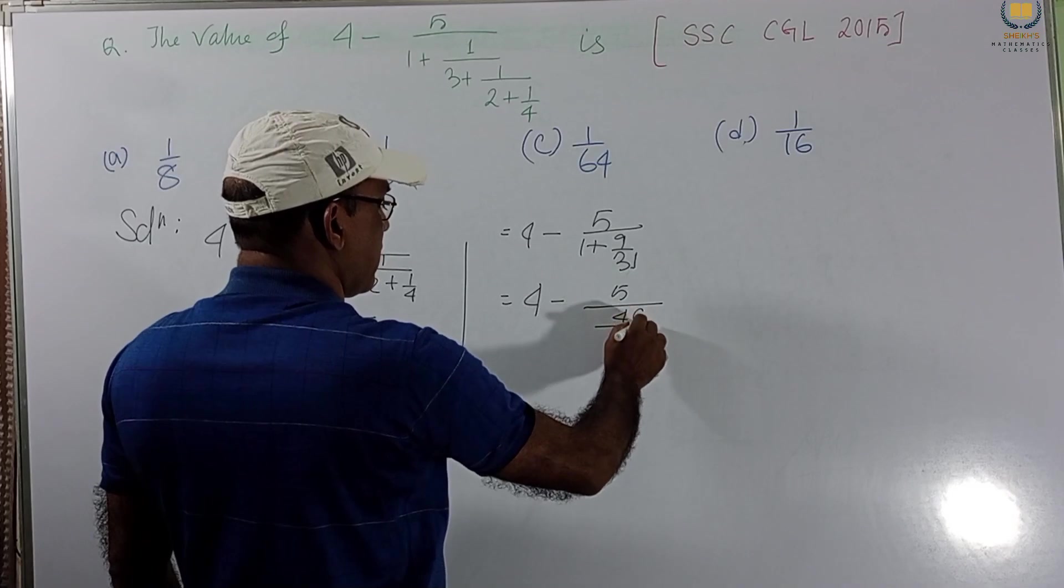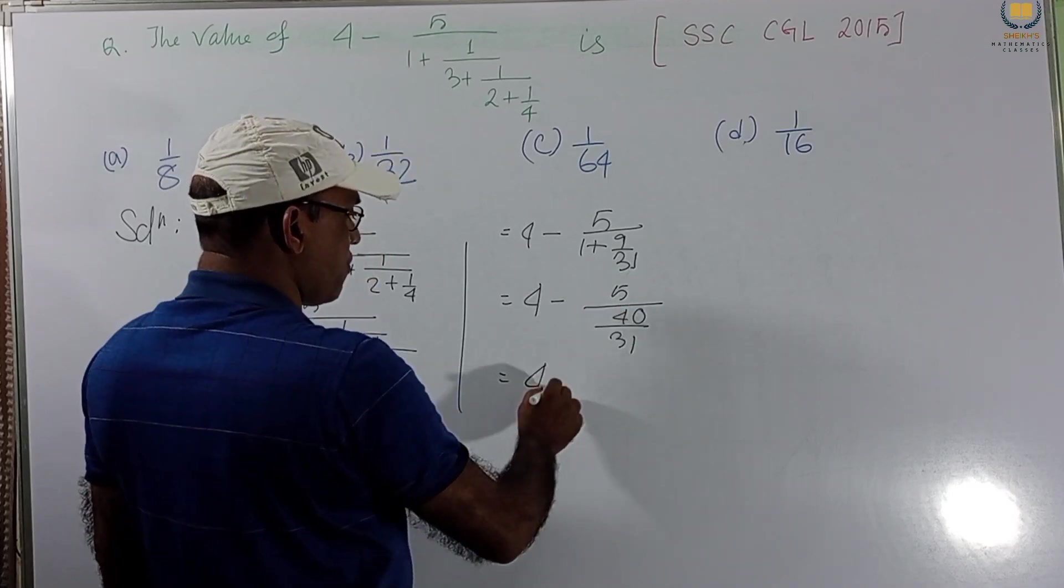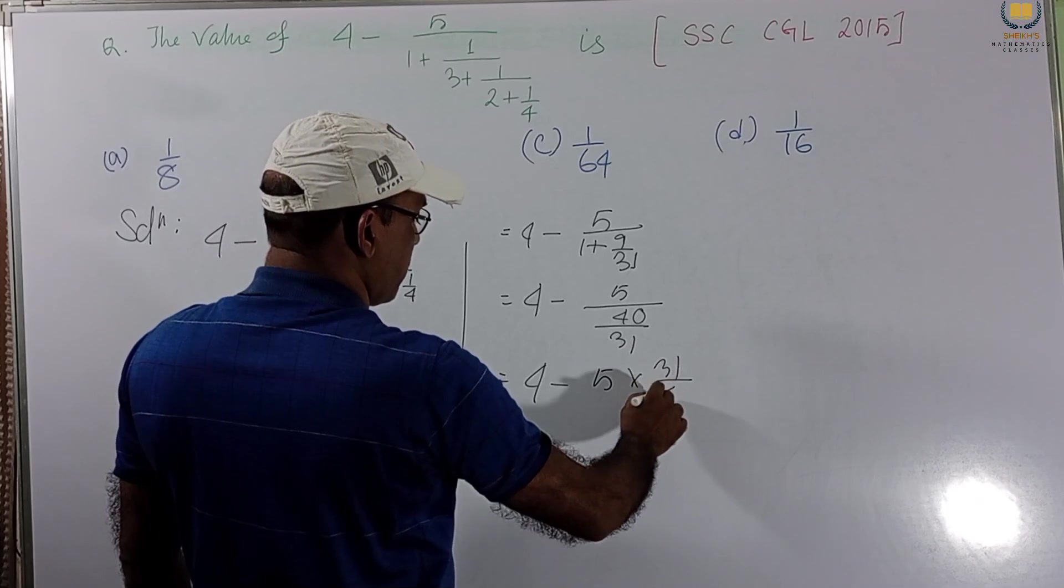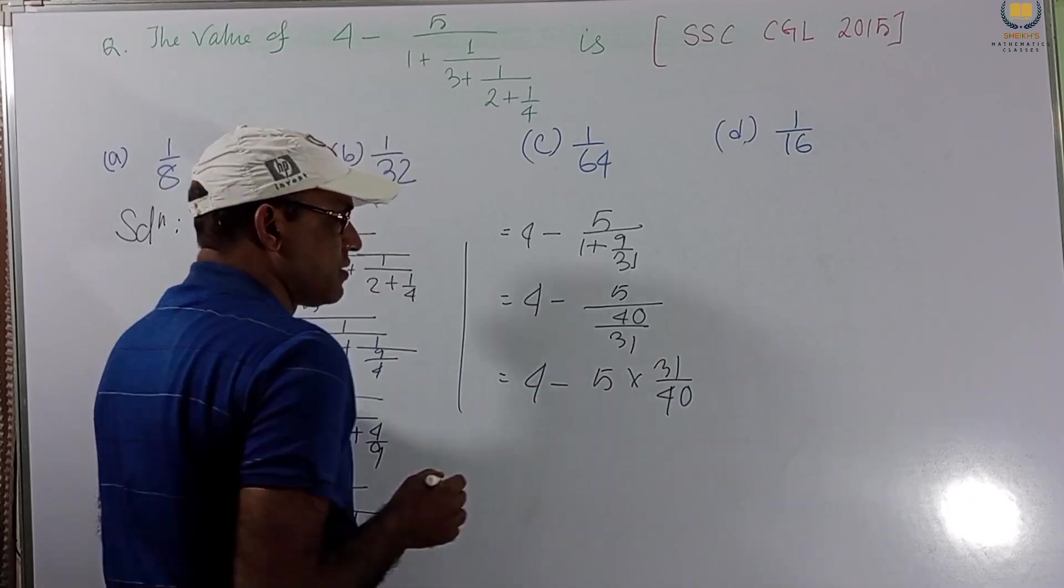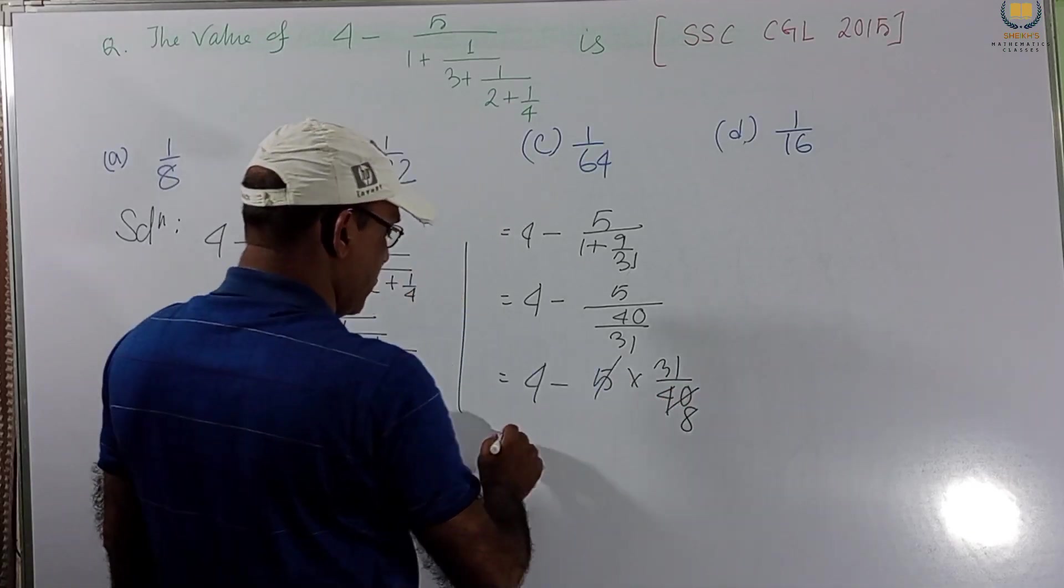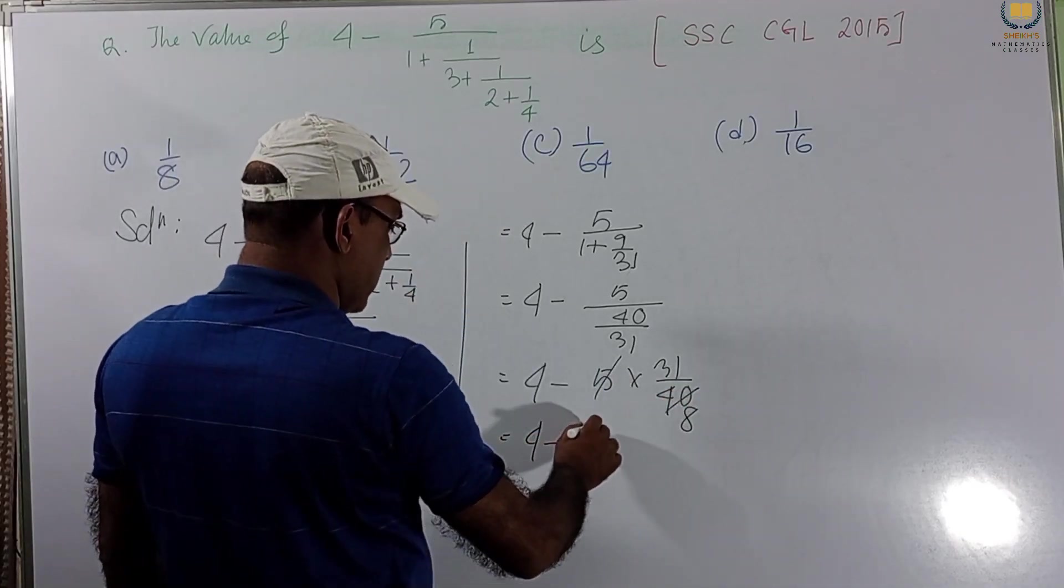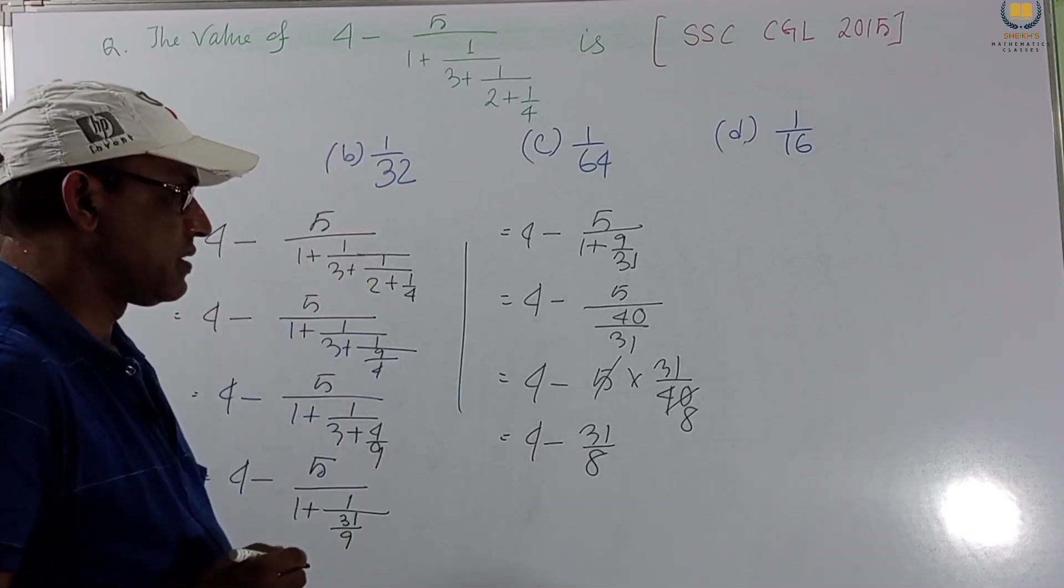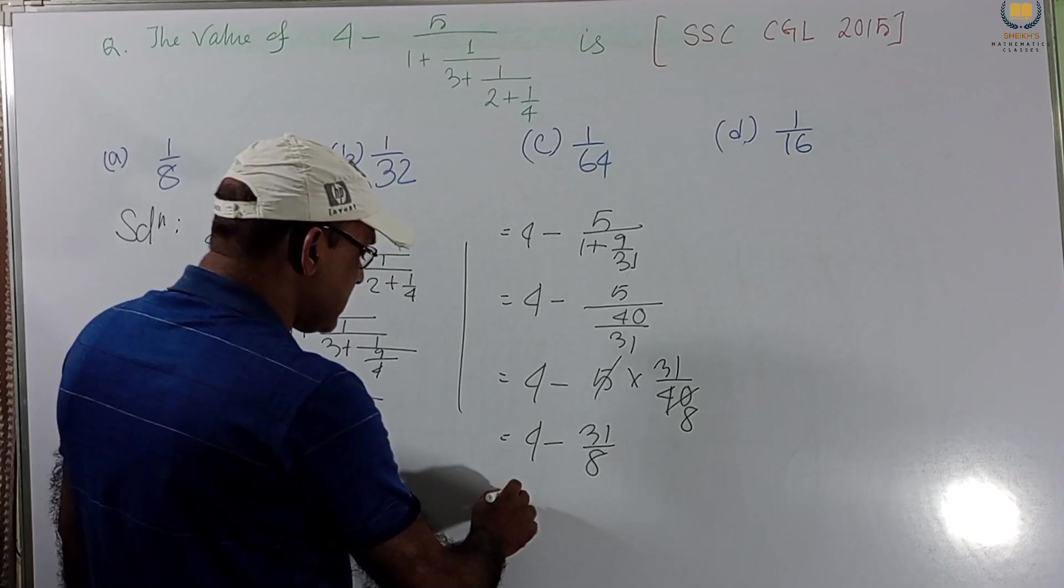9 by 31. This 9 becomes in numerator by 31. Again, we taking LCM. LCM is 31. This is 31. 1s are 31 plus 9, 40. So, this is 4 minus 5 into 31 by 40. This one. And we are cancelling this. This is 8.